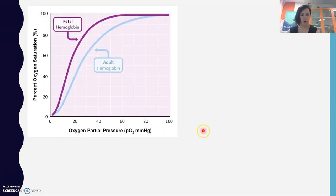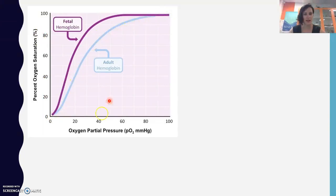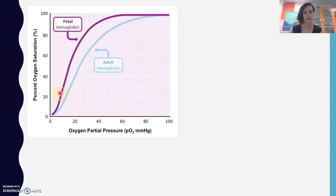These are called oxygen dissociation curves — or hemoglobin dissociation curves. As the oxygen content gets greater, the percentage oxygen saturation — how much oxygen the hemoglobin is actually holding onto — will change. Looking at the adult hemoglobin curve, as oxygen increases it goes up and eventually flattens out. But for fetal hemoglobin, even at a lower amount of oxygen present, it has a higher saturation, meaning it grabs onto any oxygen it can and holds it at a stronger affinity than adult hemoglobin.